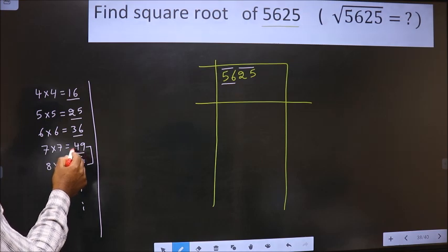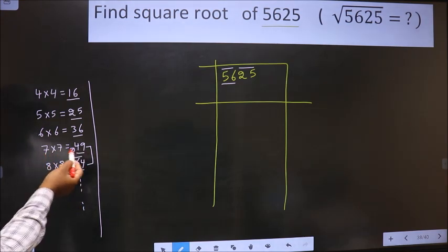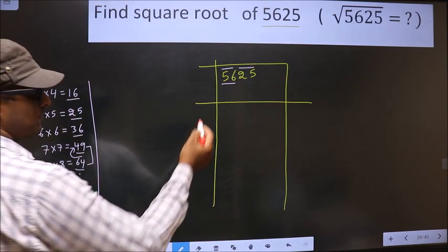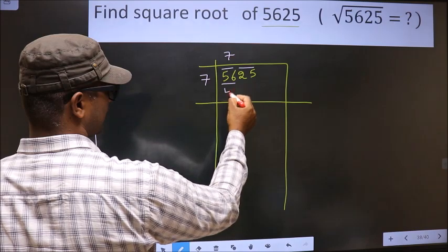56 lies between these two numbers. So we take the smaller number, that is 49. 49 is 7 × 7, 49. So we take 7.